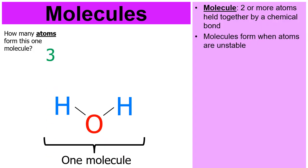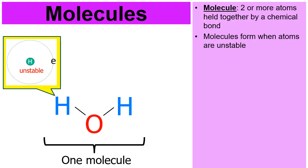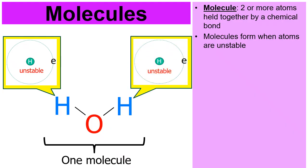Molecules form when atoms are unstable. Look at the hydrogen on the left — it only has one electron in its outer level. It's unstable. Same with the hydrogen on the right — one electron in its outer level. Unstable.